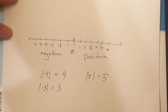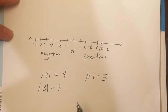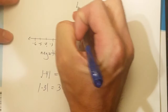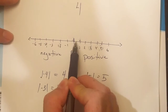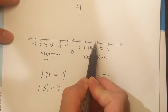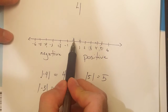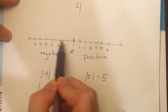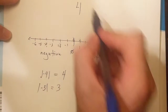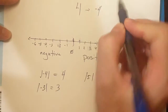And this will help me with my opposites. Opposites talk about the same distance from zero, but the opposite direction. So if I want to find the opposite of four — four has a distance of one, two, three, four to the right — so the opposite of four will be the same distance but in the other direction: one, two, three, four to the left. So the opposite of four is negative four.